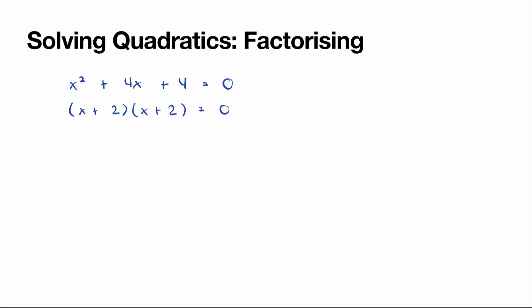You might recognize this is a perfect square, so we can write it as (x + 2)² = 0. Since a number squared equals 0 only when that number is 0, we get x plus 2 equals 0, meaning x equals negative 2. This gives only one answer, unlike the previous examples with two different answers, because we have the same bracket twice.